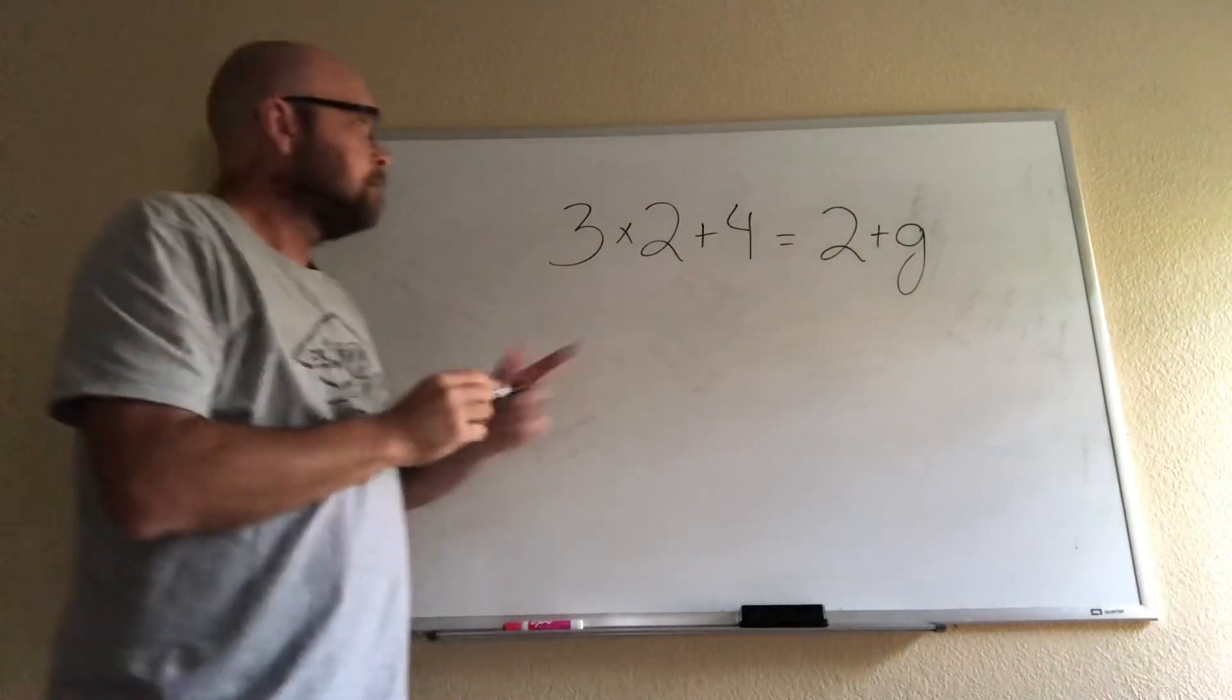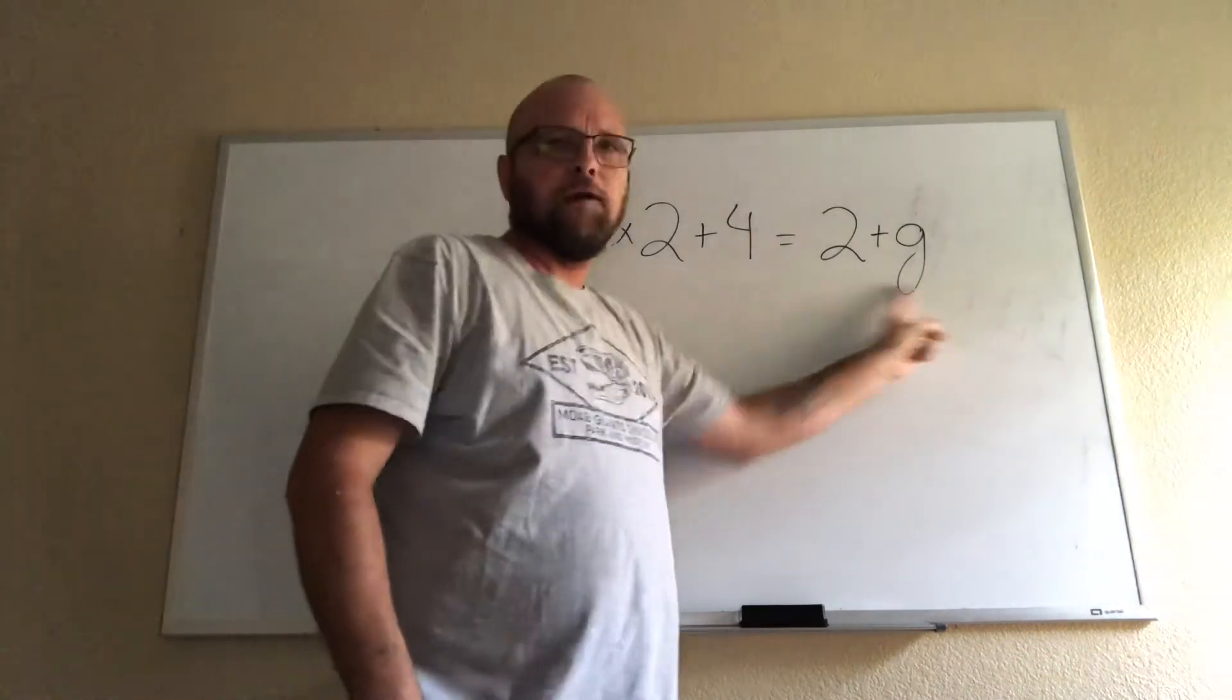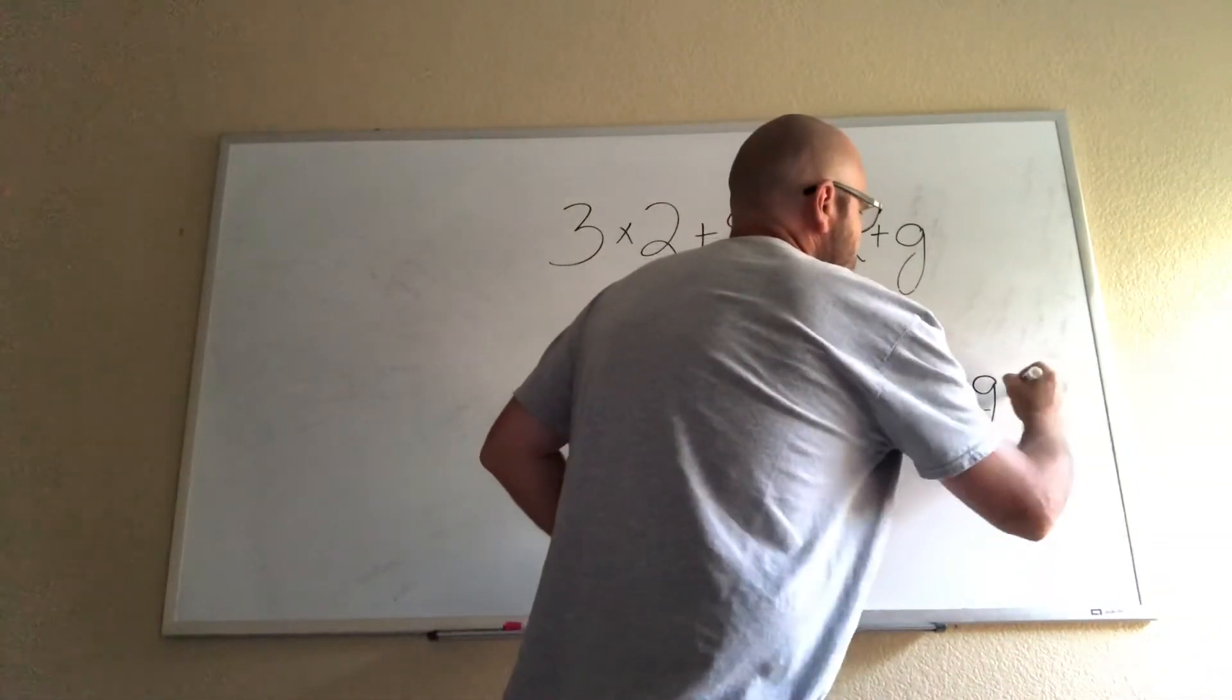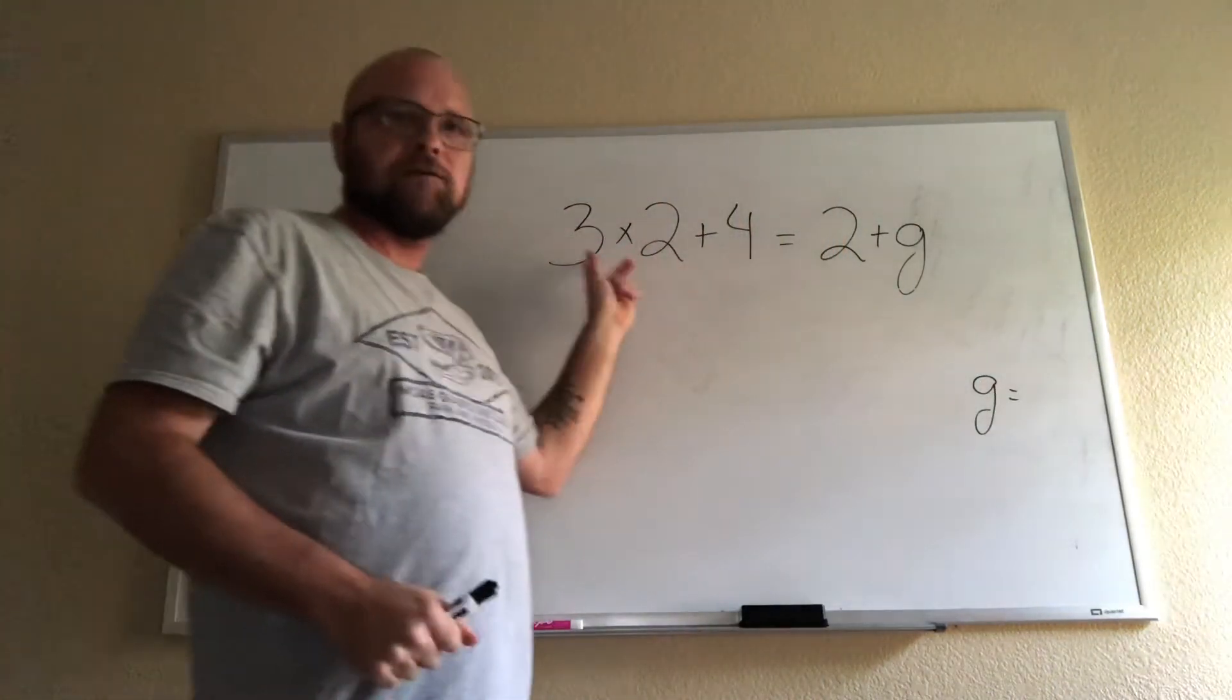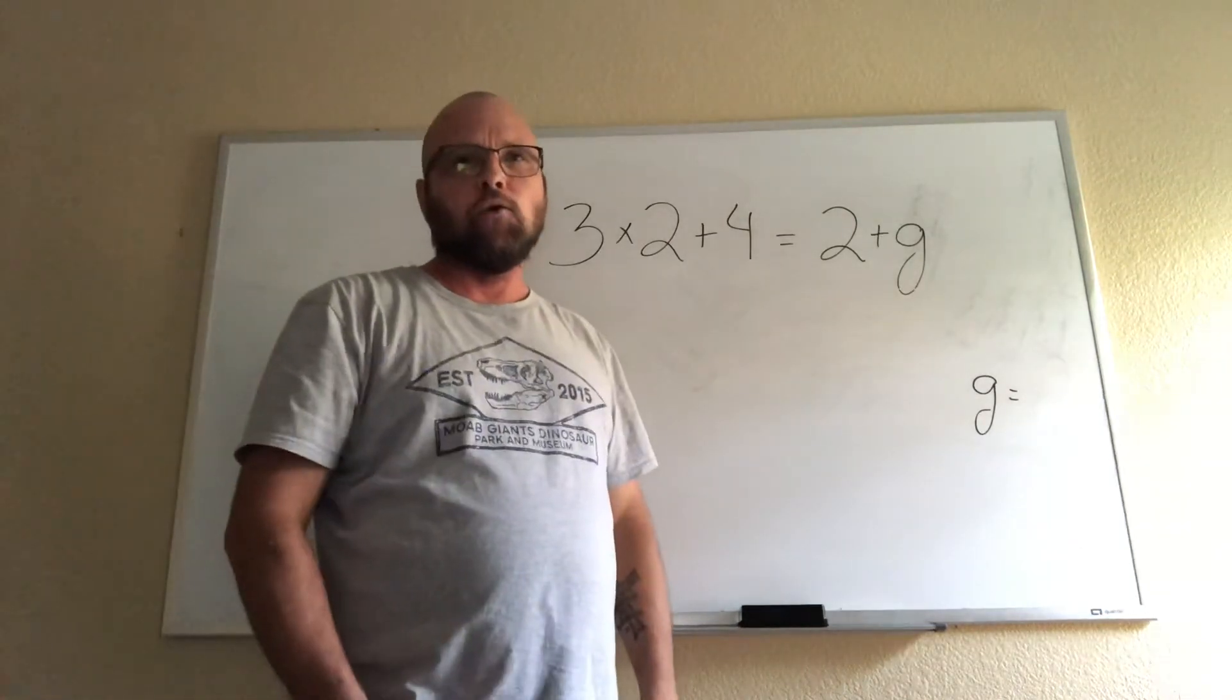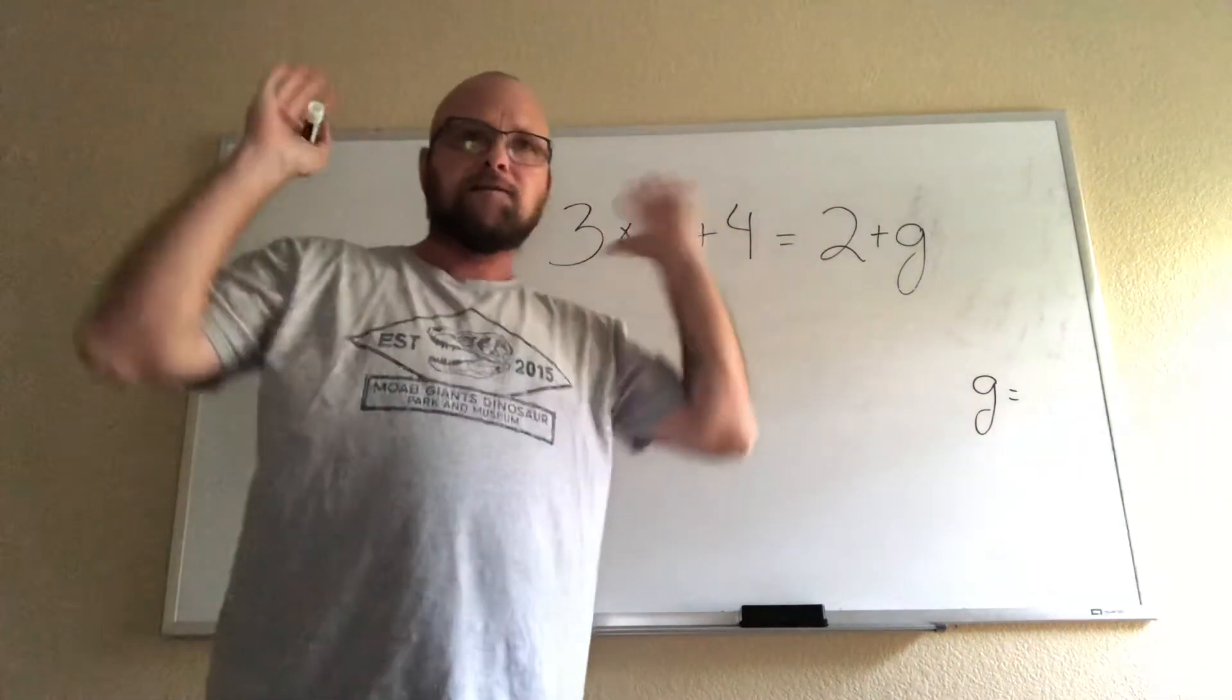All right, again the equal sign: whatever we get on this side needs to be the same thing we get on this side and so we want to find out what G equals. Now this has multiple operations, it has multiplication, it has addition. You always do multiplication or division before you do addition and subtraction. Always, always.